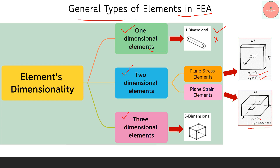The third category is three-dimensional elements. As the name indicates, by definition it has three dimensions — all three directions have dimensions: x, y, and z. So we call it a three-dimensional element type.